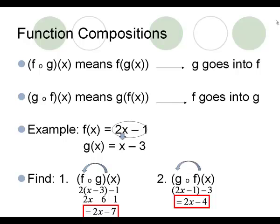Again, it's not Fogg, it's not Goff. Open circle means a composition — one is going into the other one as x.